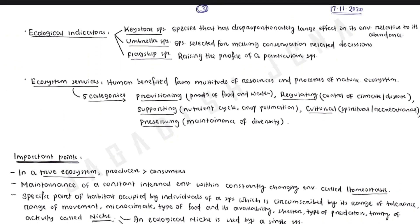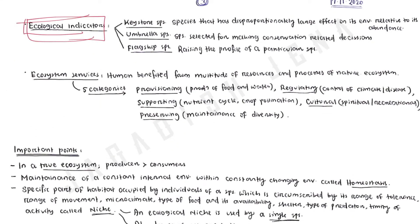What are ecological indicators? There are different ecological indicators like keystone species, umbrella species, and flagship species. Keystone species is a species that has a disproportionately large effect on its environment relative to its abundance. Umbrella species are those selected for making conservation-related decisions — wherever there are natural parks or conservation processes, the species on which conservation decisions have been taken are known as umbrella species. Flagship species are those used for raising the profile of a particular species.